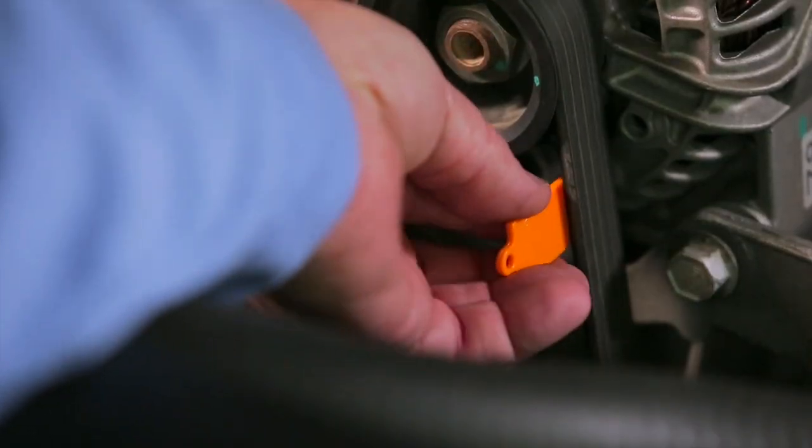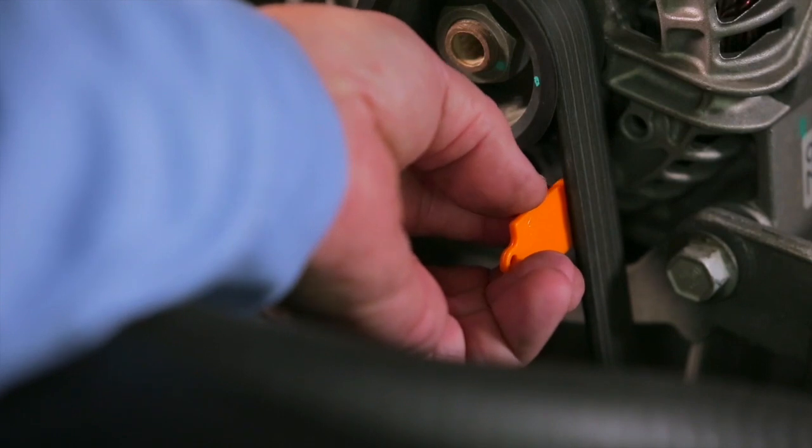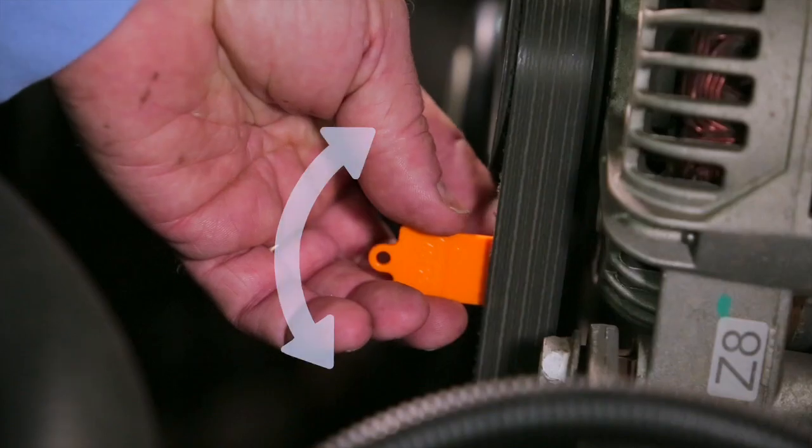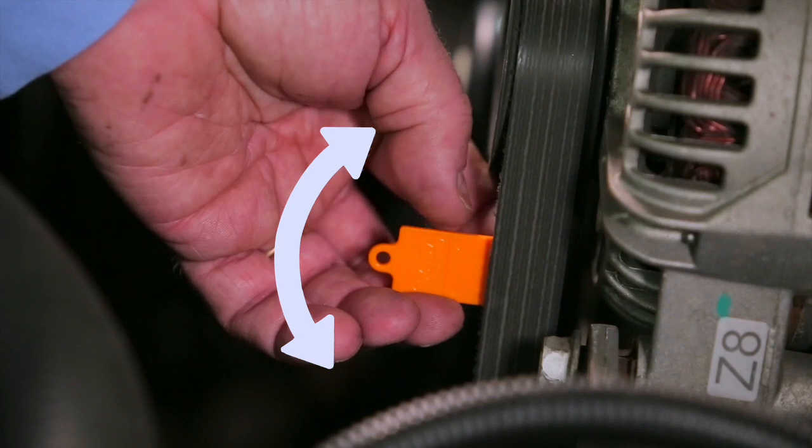With the engine off, press the gauge into the belt grooves using gentle pressure to hold the gauge against the belt. Attempt to rock the gauge in a lateral motion.